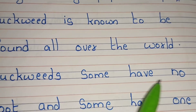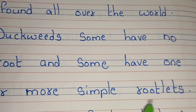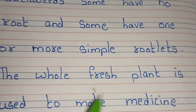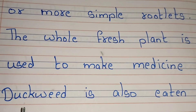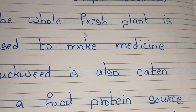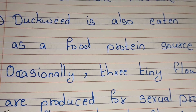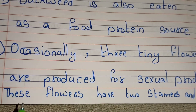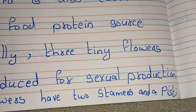Some have no root and some have one or more simple rootlets. The whole fresh plant is used to make medicine. Duckweed is also eaten as a food protein source. Occasionally, three tiny flowers are produced for sexual reproduction. These flowers have two stamens and a pistil.